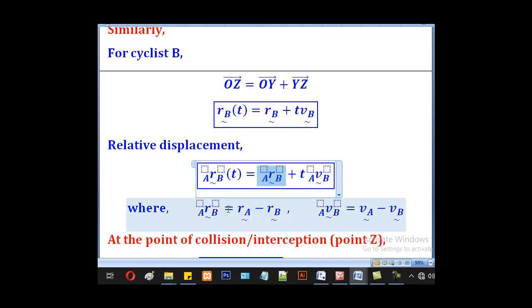RAB is the initial relative displacement of A to B, and it's given by the formula RA minus RB. Note that this A is here and this B is there. VAB is the relative velocity of A to B, and it's given by VA minus VB. Note that A is here and B is there.